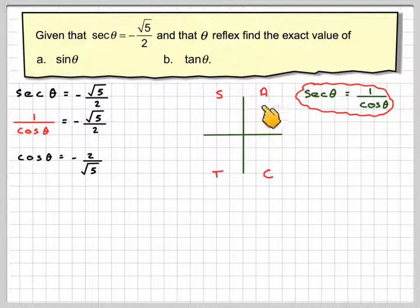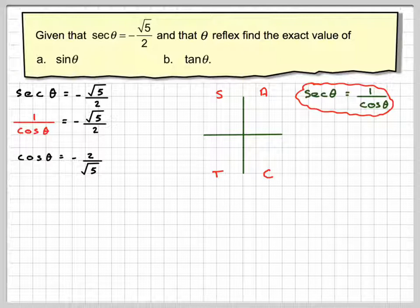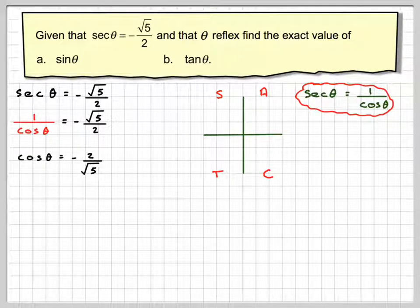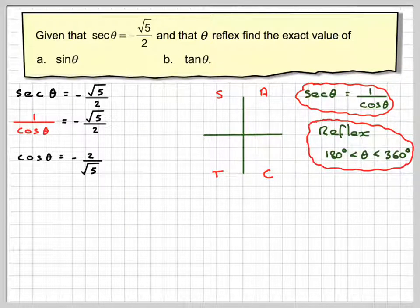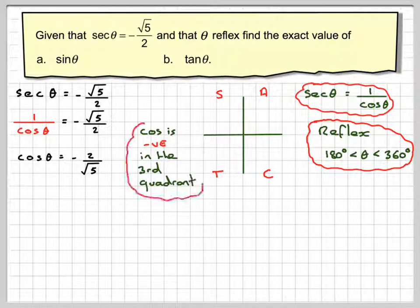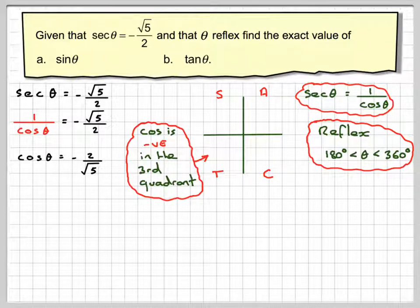Now, if we do our CAST diagram, remember this tells us in which quadrant things are positive. Now, reflex angle is any angle between 180 and 360. So which of these two quadrants are we going to select? Because the angle starts from here and goes all the way around to 360. Well, cos is negative in this quadrant, so we're looking for angles in the third quadrant.